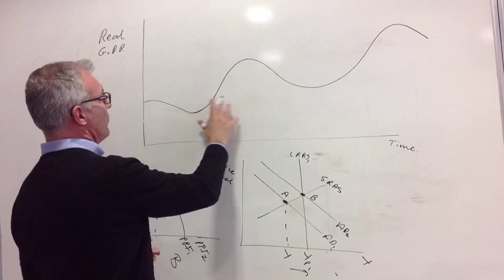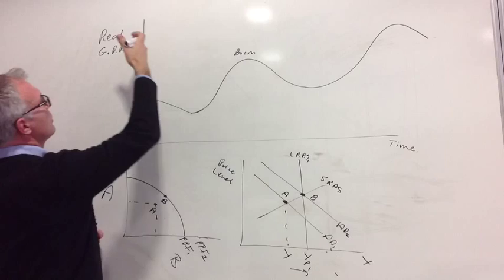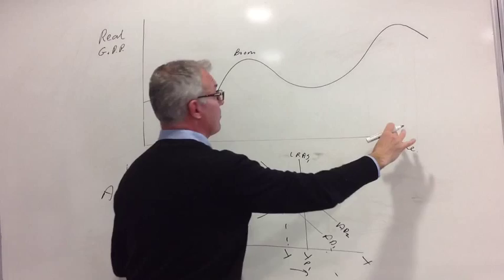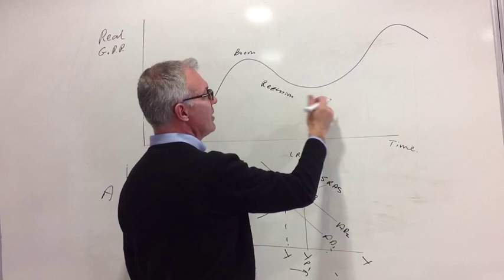And this basically shows a stylized view of the economic cycle, in which we have a boom here. And of course, what we're showing is real GDP on the left, taking into account inflation, and time. So we have a boom here, then followed by a recession. Remember, a recession is defined as two successive quarters of negative economic growth.